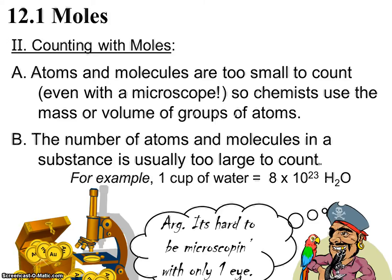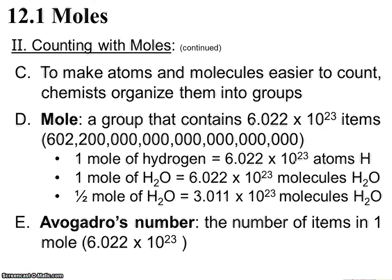So atoms and molecules obviously are too small for us to count by hand even if we had a microscope. So chemists use mass or volume or groups of atoms and molecules to count them more easily. And also, as I had mentioned earlier, the number of atoms and molecules you would need to count is much too large to count. So for example, one cup of water, 8 ounces, has 8 times 10 to the 23rd molecules of H2O.